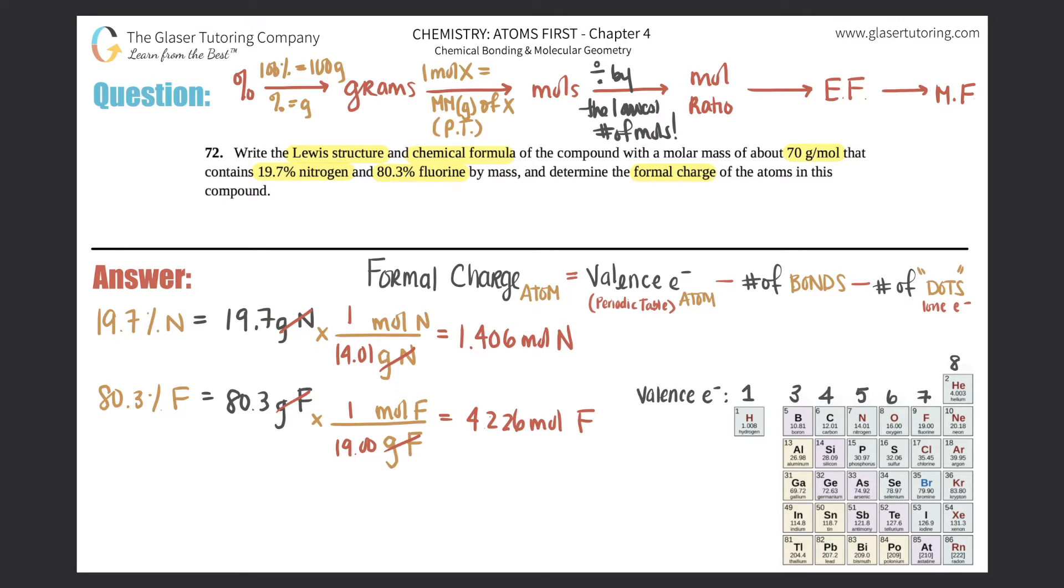I have 1.406 versus 4.226, I'm going to divide each by 1.406, and that will get me my mole ratio. Just know at this stage of the game you are looking for whole numbers, so we hope that we get a whole number like 1, 2, 3, and 4.